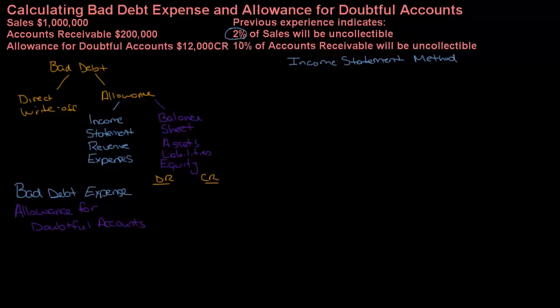So what we're going to do is take our one million in sales and multiply that by two percent, or 0.02 — remember, two percent is two cents out of a dollar. If I take two percent of one million, that's twenty thousand.